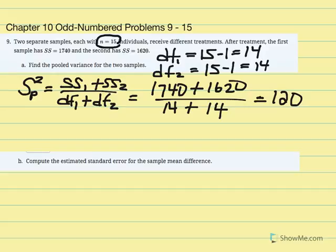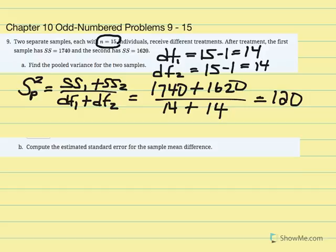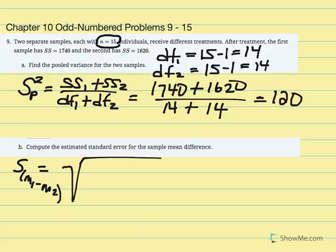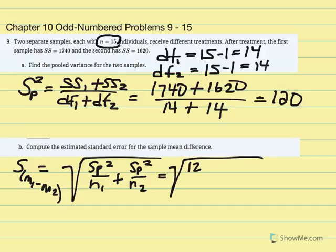Now we move on to part B, which says compute the estimated standard error of the sample mean difference. The formula is: s sub (m1 minus m2) equals the square root of pooled variance over n1 plus pooled variance over n2. Replacing variables, pooled variance equals 120, n1 equals 15, pooled variance over n2 is also 15.